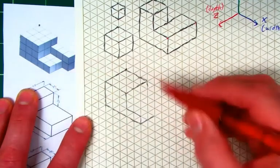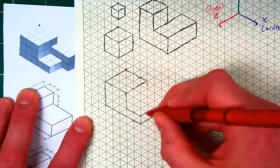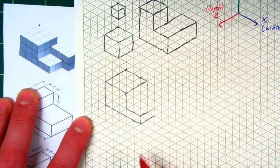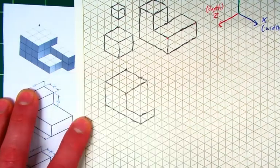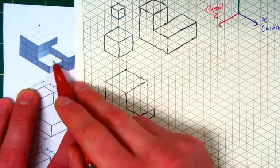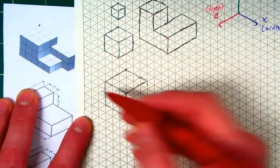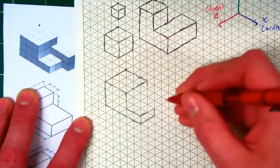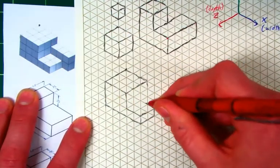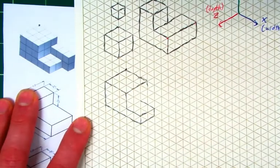From this edge right here, it also goes back two—one, two. Make sure you're going up into the right, and then it goes down one. That finishes off that face. Then we can finish off this top face right here, this lowest top face, by going from this corner to the left two—one, two.